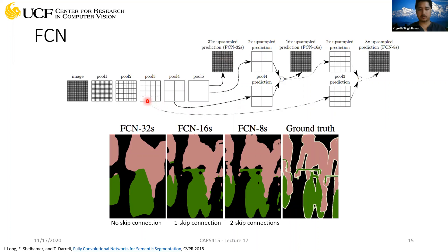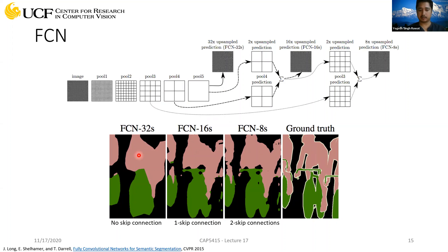We can also improve segmentation by taking features from intermediate layers. The prediction from the final layers is very low resolution, giving very coarse segmentation. If you pick features from earlier layers, you get finer boundary details. Including these features leads to improved boundaries — you can see that the coarse prediction gives just a blob for, say, this bicycle, and it improves as you include higher-resolution features from earlier layers.